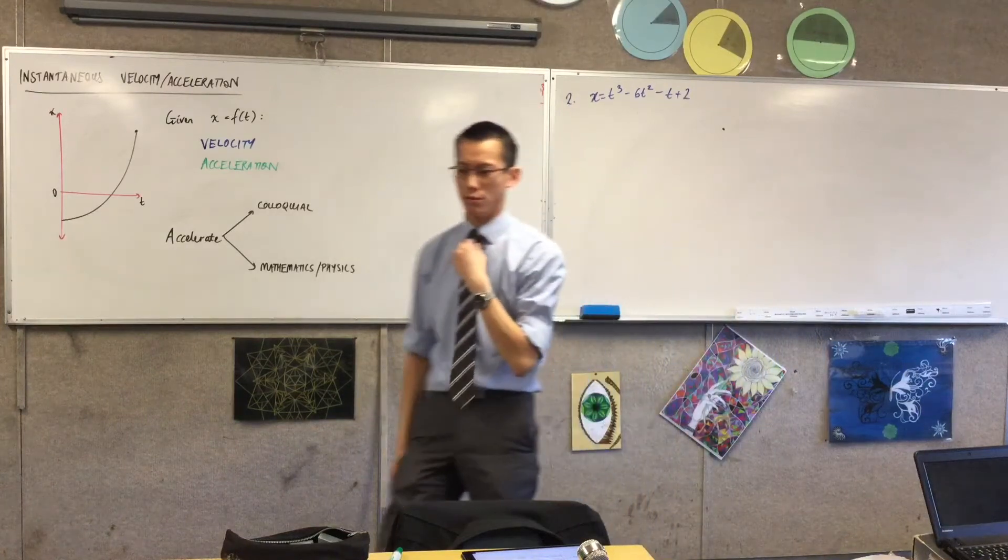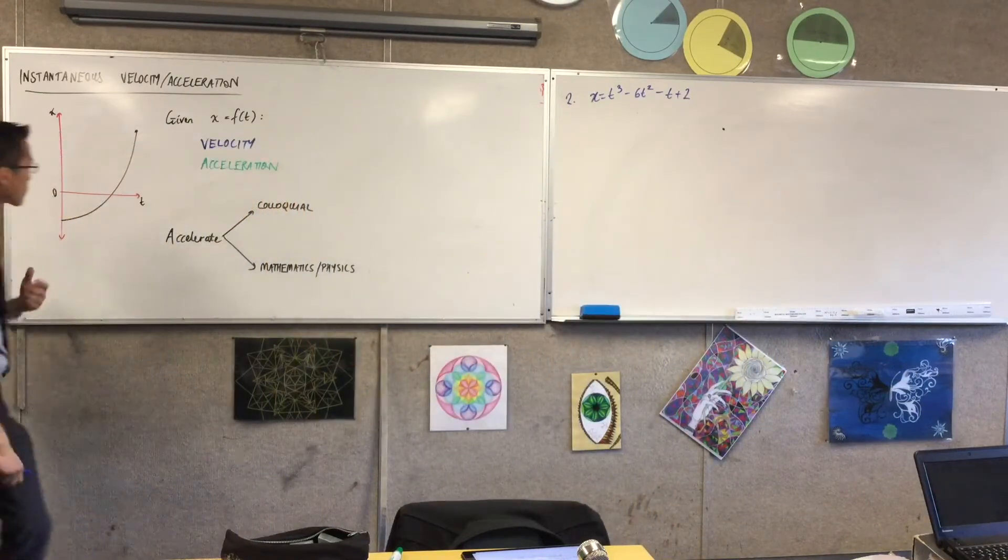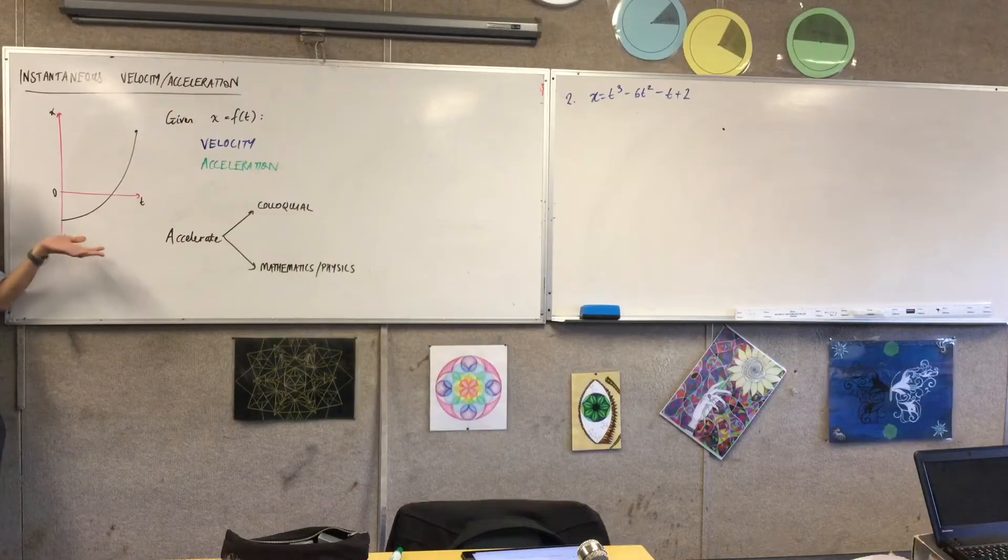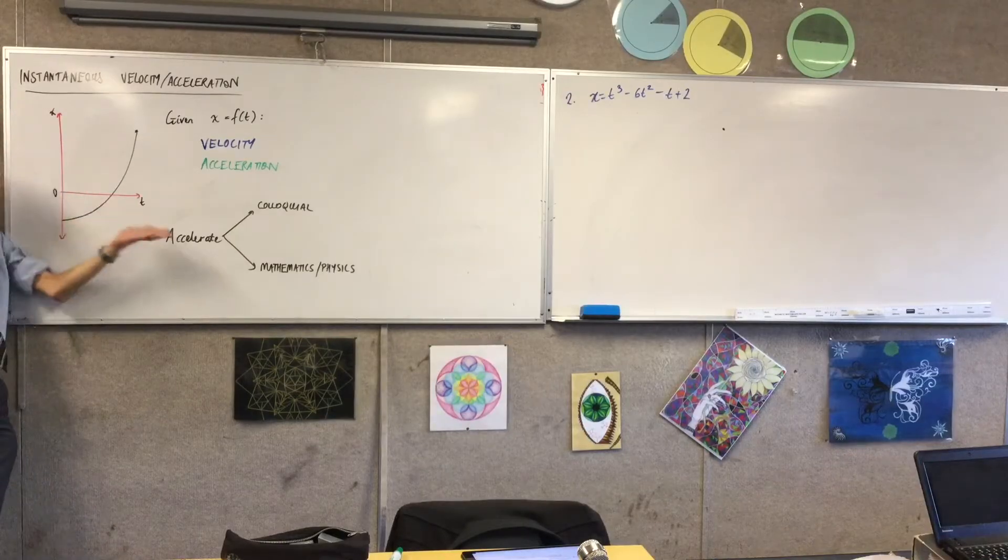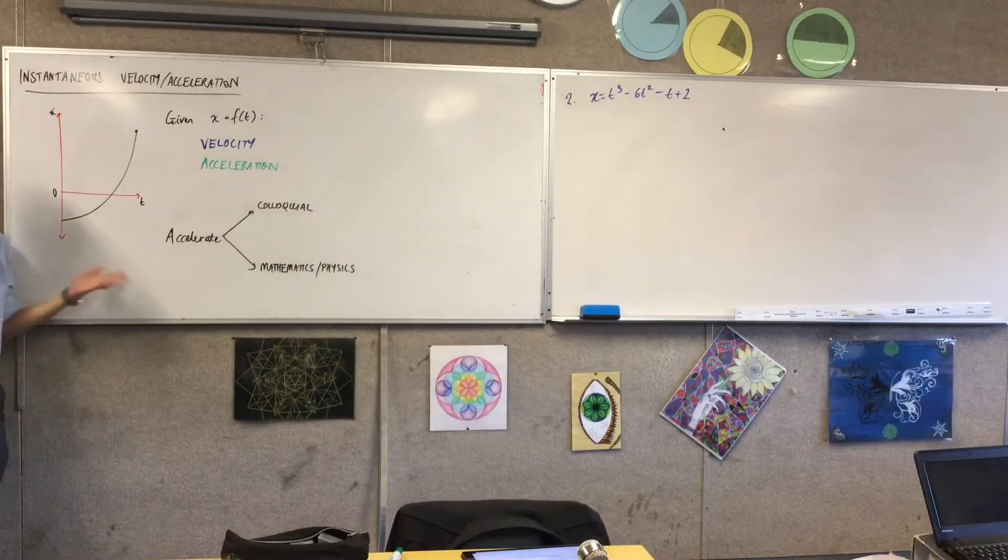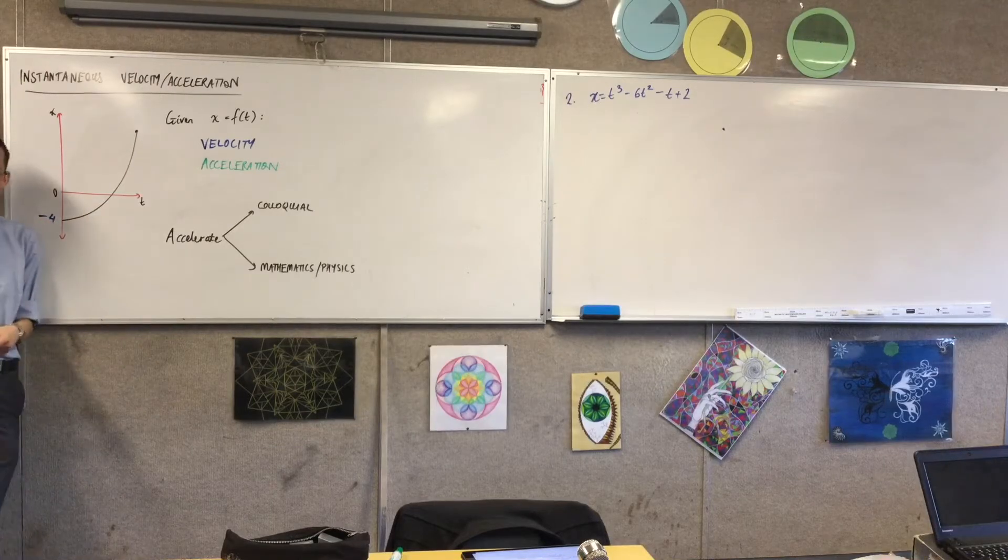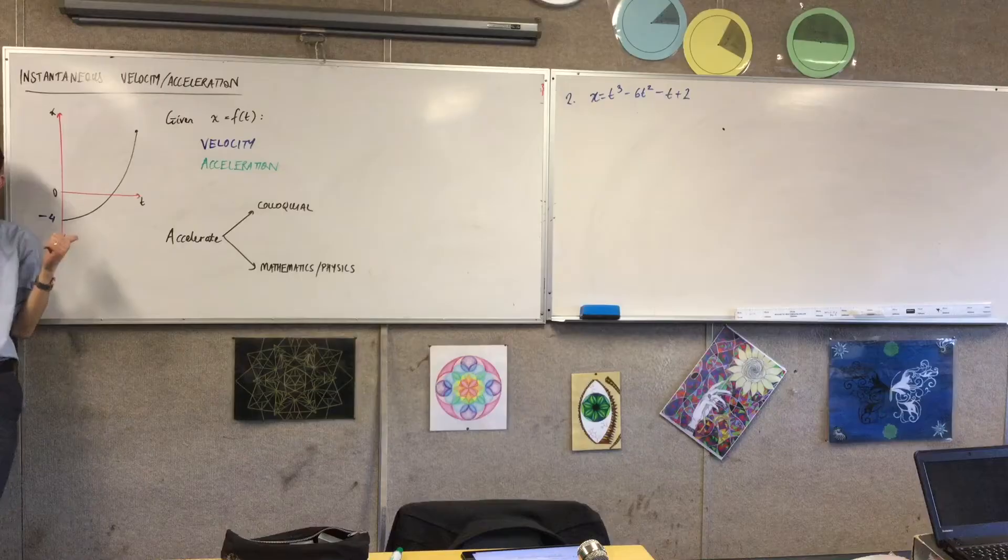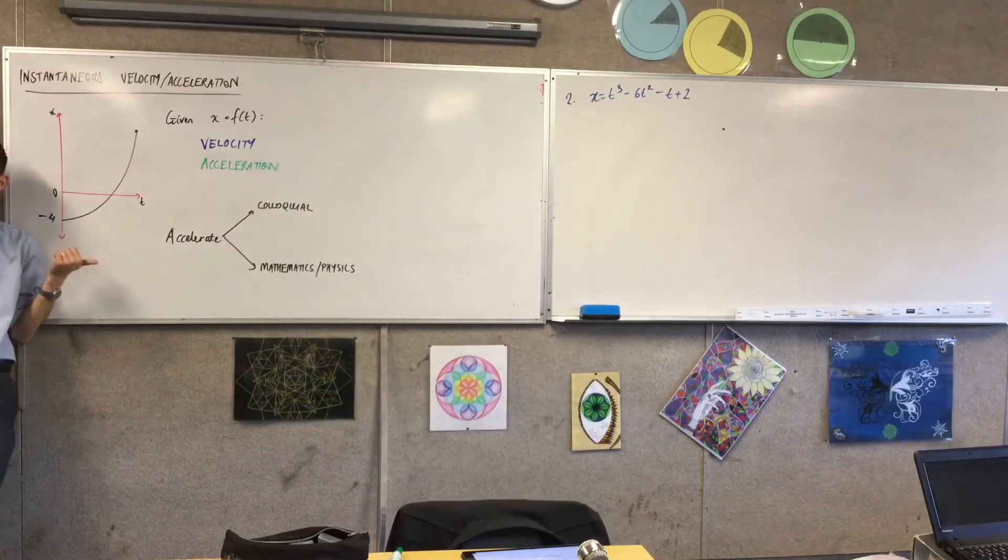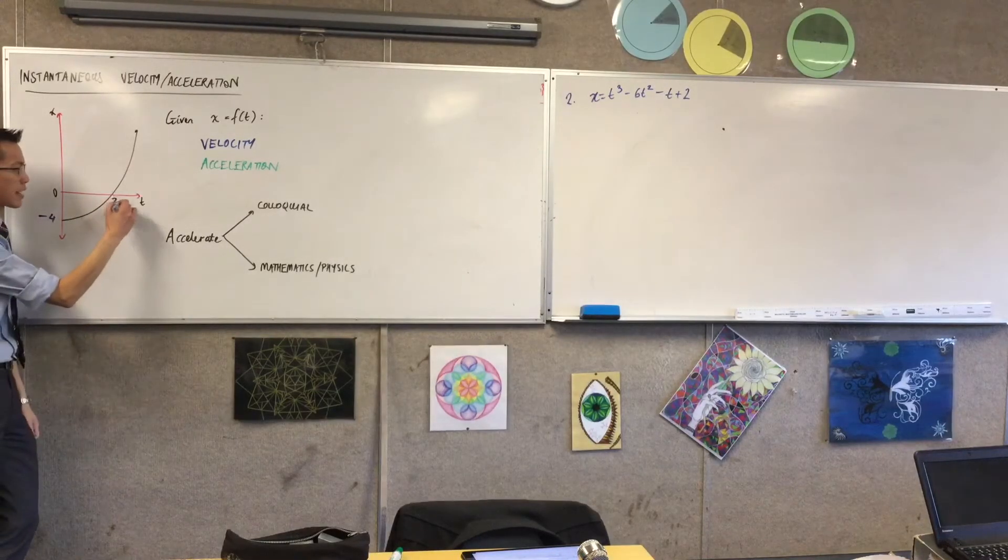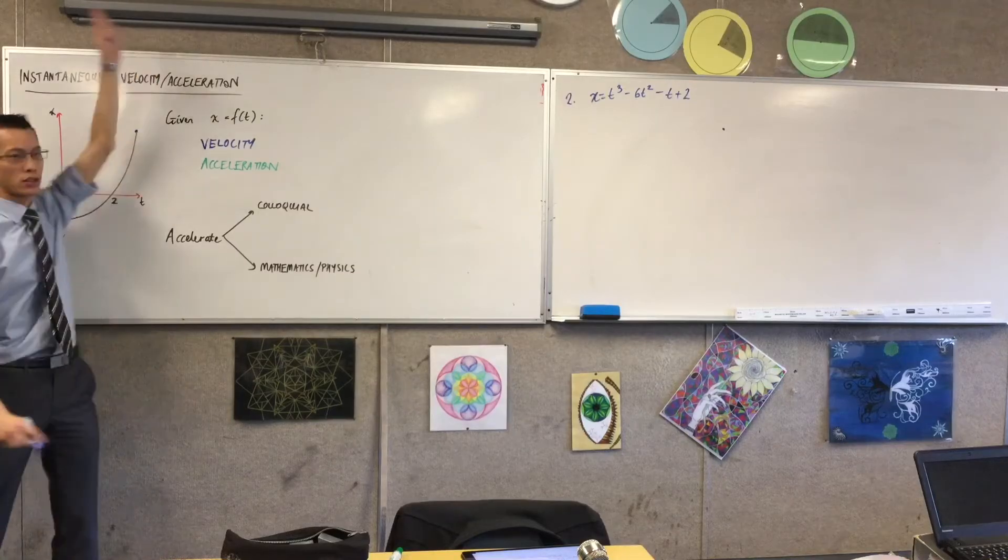Now I want you to remember to half past seven this morning, and we looked at this guy. This was x displacement equals t squared minus four. It was just an example. We started at initial condition was four meters in the negative direction from the origin. And then after two seconds, we passed the origin, and then we just kept on going.